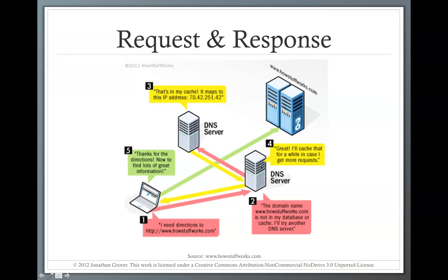DNS servers talk to other DNS servers all day long, keeping track of and associating a domain name with something called an IP address. An IP address is very similar to the address on your house — it's a way of identifying the location of a computer anywhere in the world. Any computer connected to the internet has an IP address, even the computer you're on right now. When you type in howstuffworks.com, you ask the DNS server if it knows the address of that hosting server. If it's not in its database, it asks another DNS server, which may have it cached — for example, mapping to the IP address 70.42.251.42.